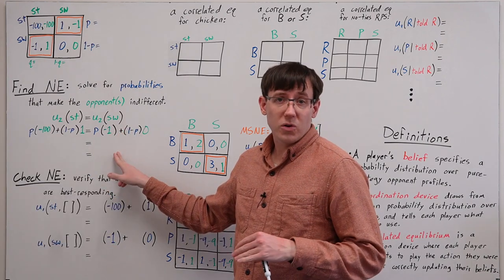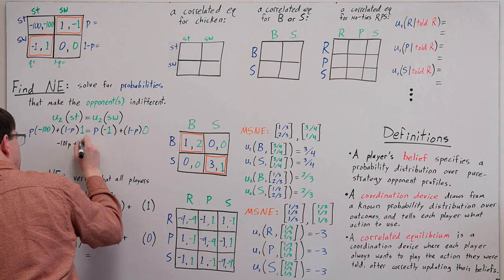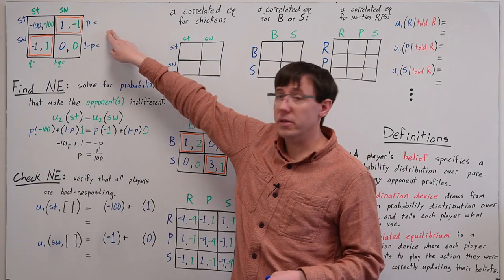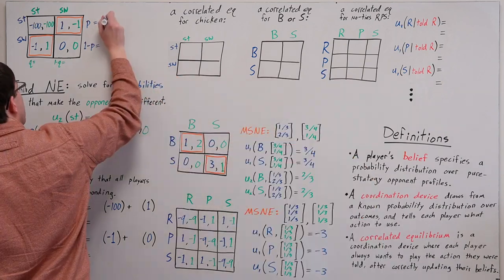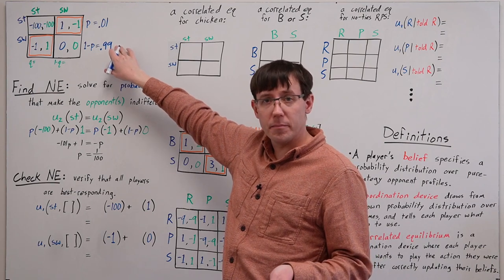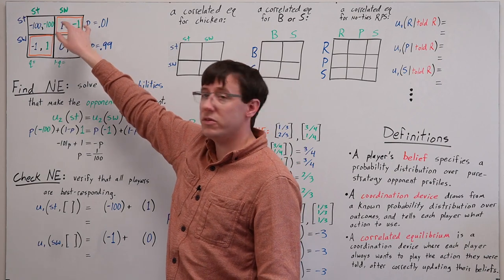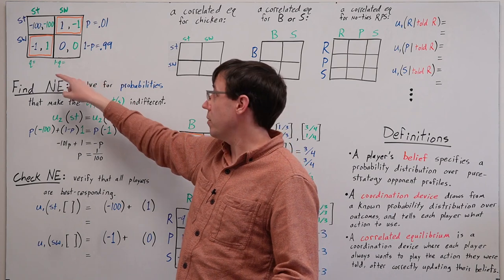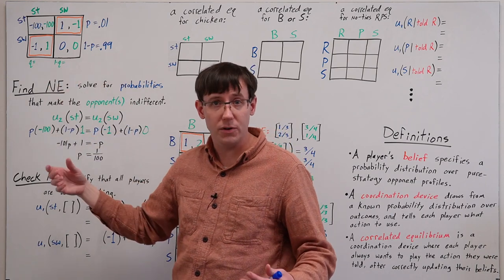From here we can simplify and solve for p, giving us p — the probability of going straight — equal to 0.01, which means the probability of swerve is 0.99. And since this game is symmetrical, meaning player 2 has the same incentives as player 1, if we solved for player 2's probabilities q and 1 minus q, we'd get exactly the same result.